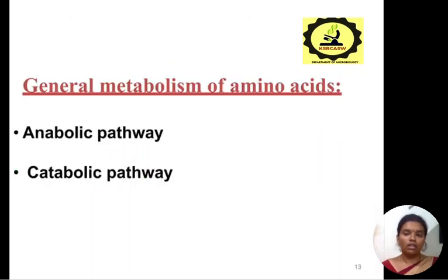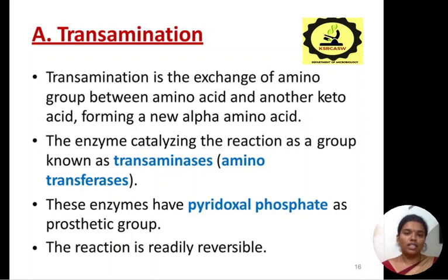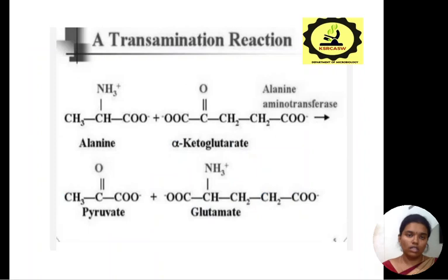Next is the general metabolism of amino acids. There are two types of metabolism: the anabolic pathway and the catabolic pathway. Next we see transamination. Transamination is the exchange of an amino group between an amino acid and a keto acid, forming a new alpha amino acid. The enzymes catalyzing this reaction are known as transaminases, that is, aminotransferases. This enzyme has pyridoxal phosphate as a prosthetic group. The reaction is readily reversible. For example, alanine combined with alpha-ketoglutarate yields pyruvate plus glutamate.